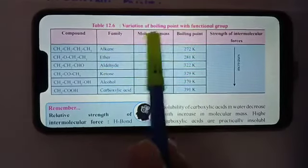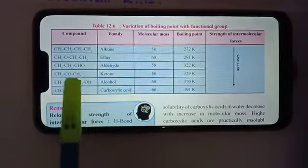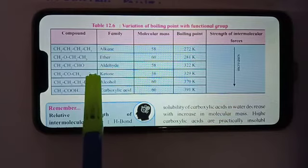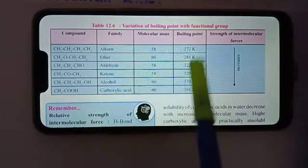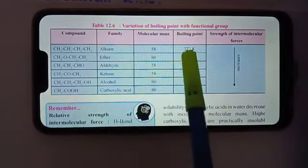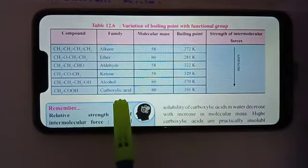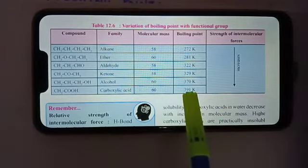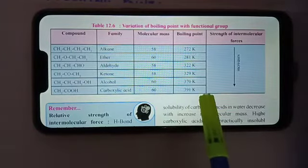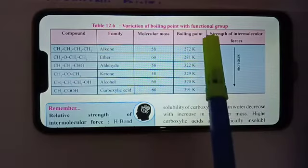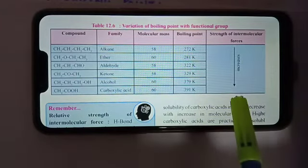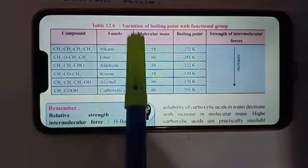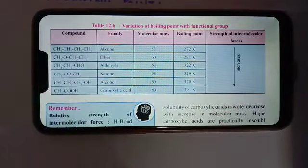Table 12.6 shows variation of boiling point with functional group. The compounds listed are alkane, ether, aldehyde, ketone, alcohol, and last carboxylic acid. The boiling point for alkane is 272 Kelvin and it goes on increasing. For acetic acid as the example of carboxylic acid, it is 391 Kelvin. You can see the strength of intermolecular forces is increasing.